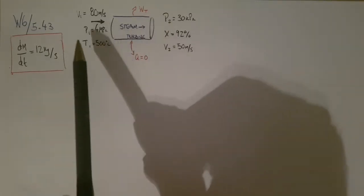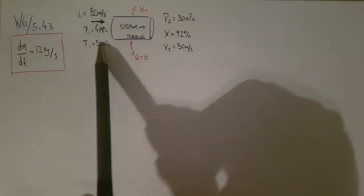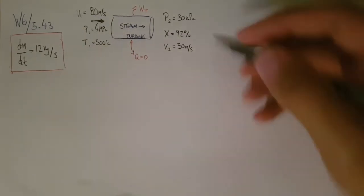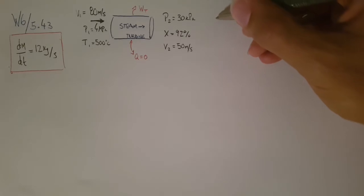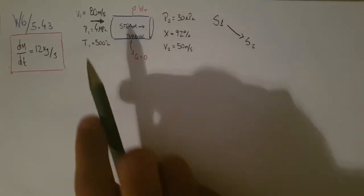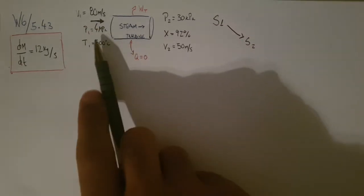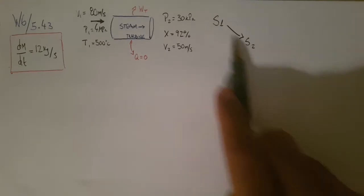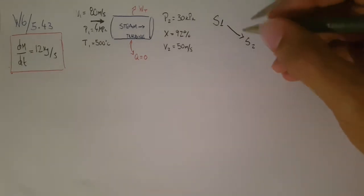Note that we're going from a higher state of energy to a lower state of energy, right? So pretty much we're starting up here, this is state 1, and then we're going to a lower state of energy, state 2. Note that our velocity decreases, our pressure decreases, so when we go from a lower state of energy, we know that because we have a difference in delta U here.